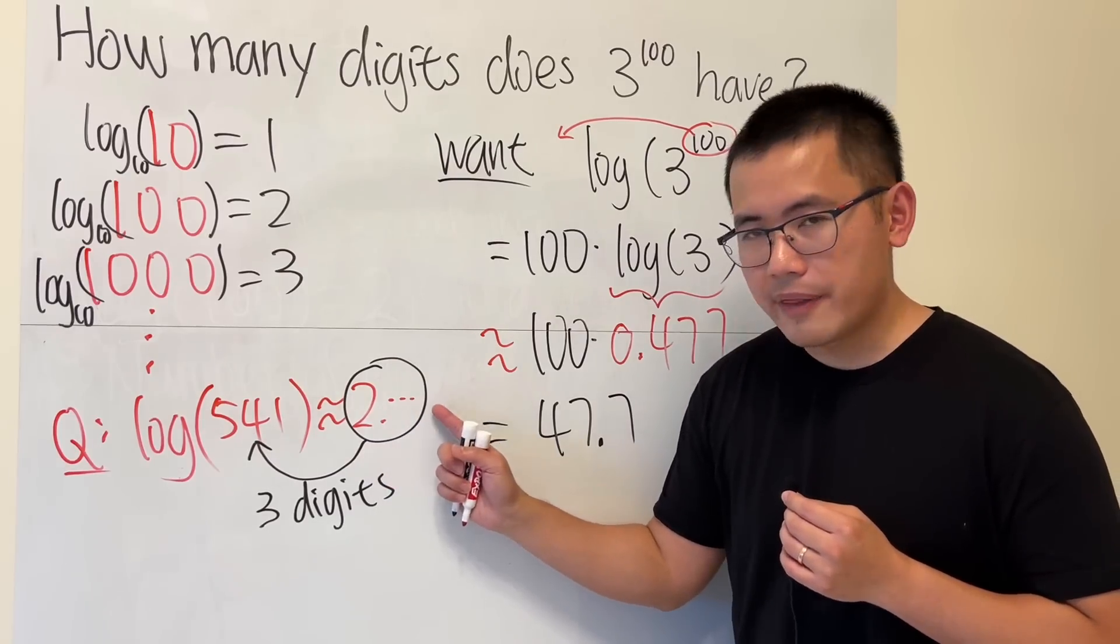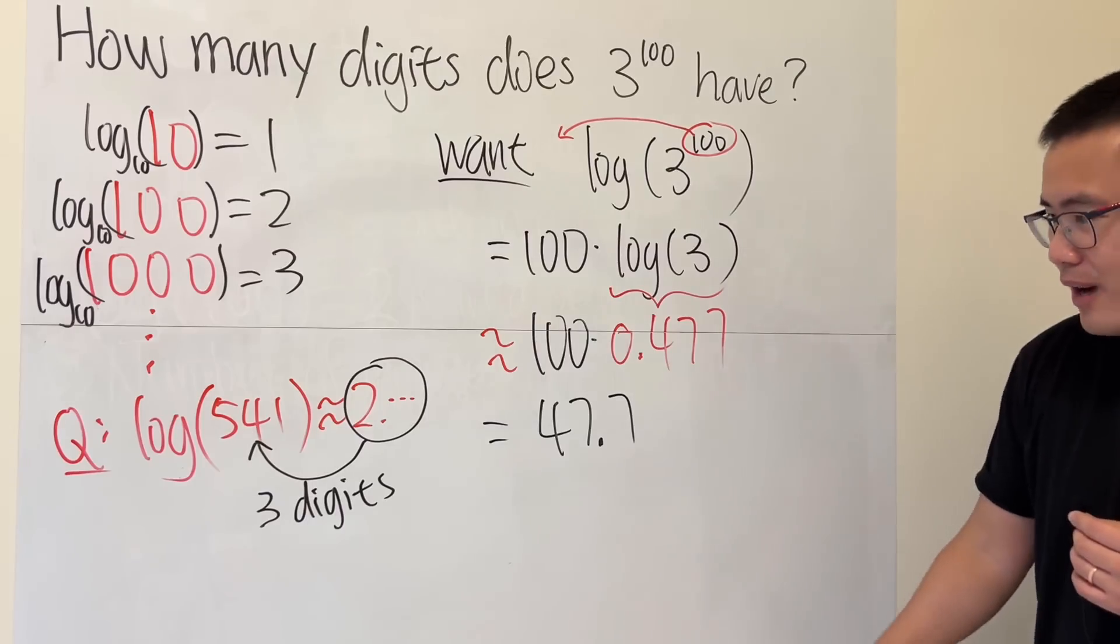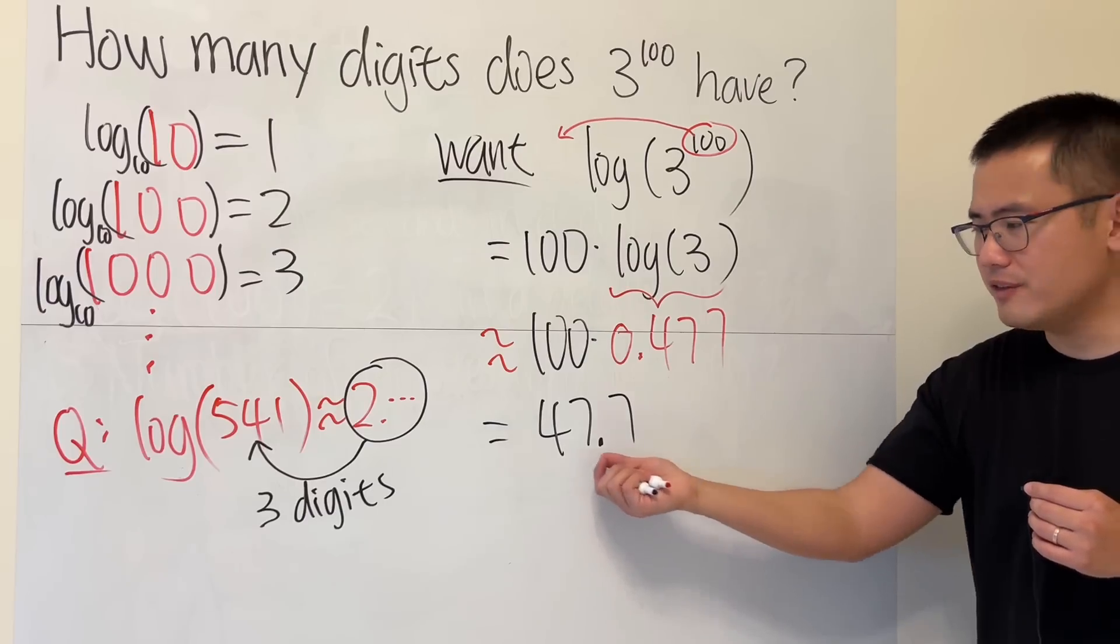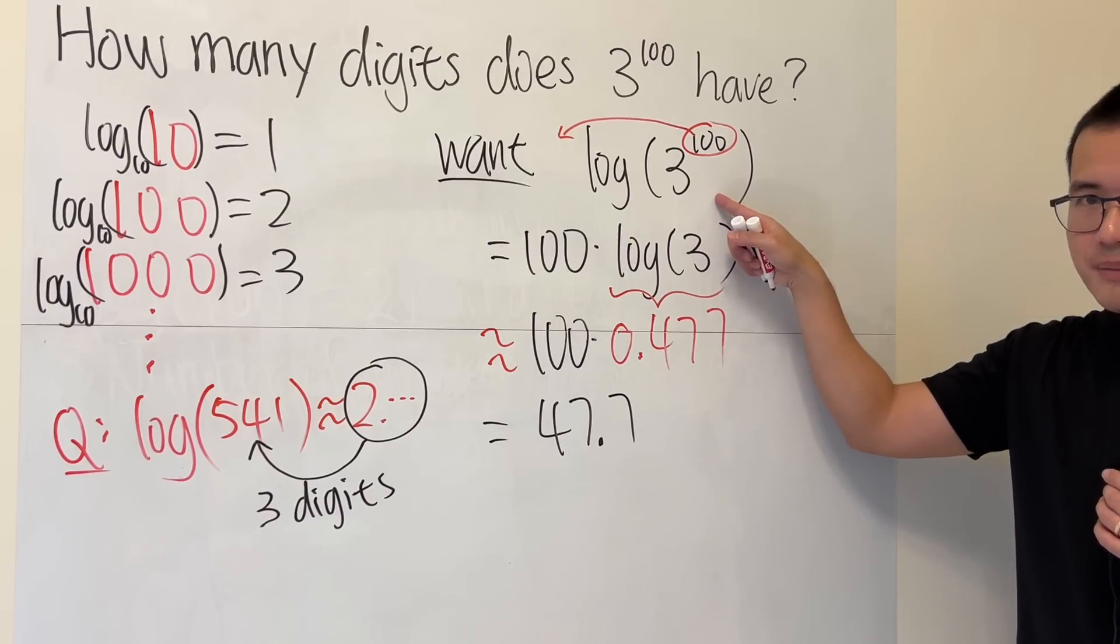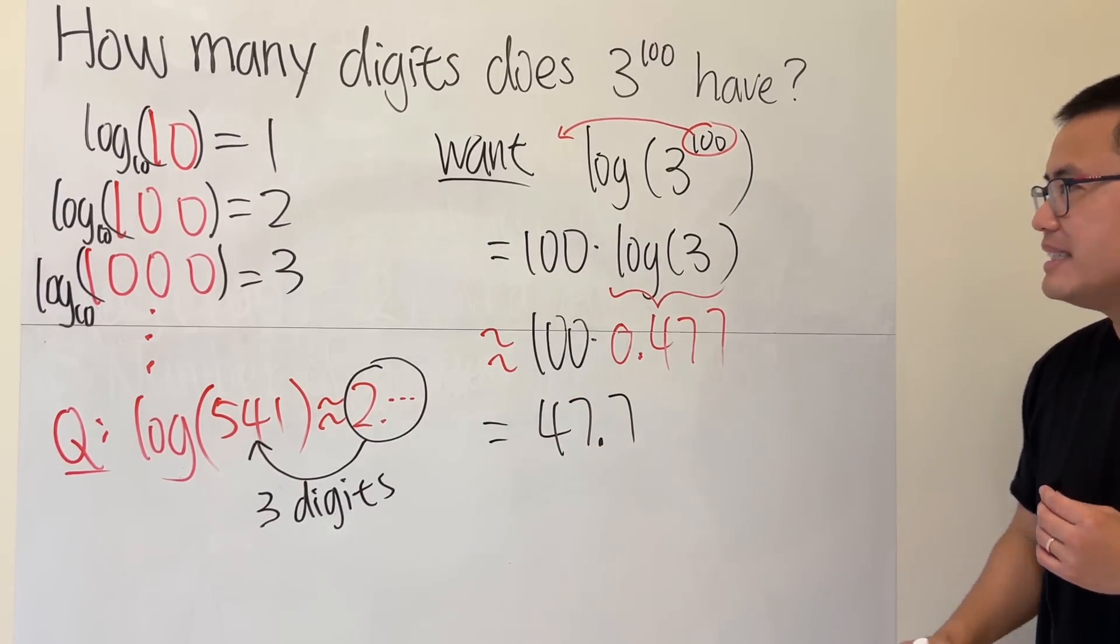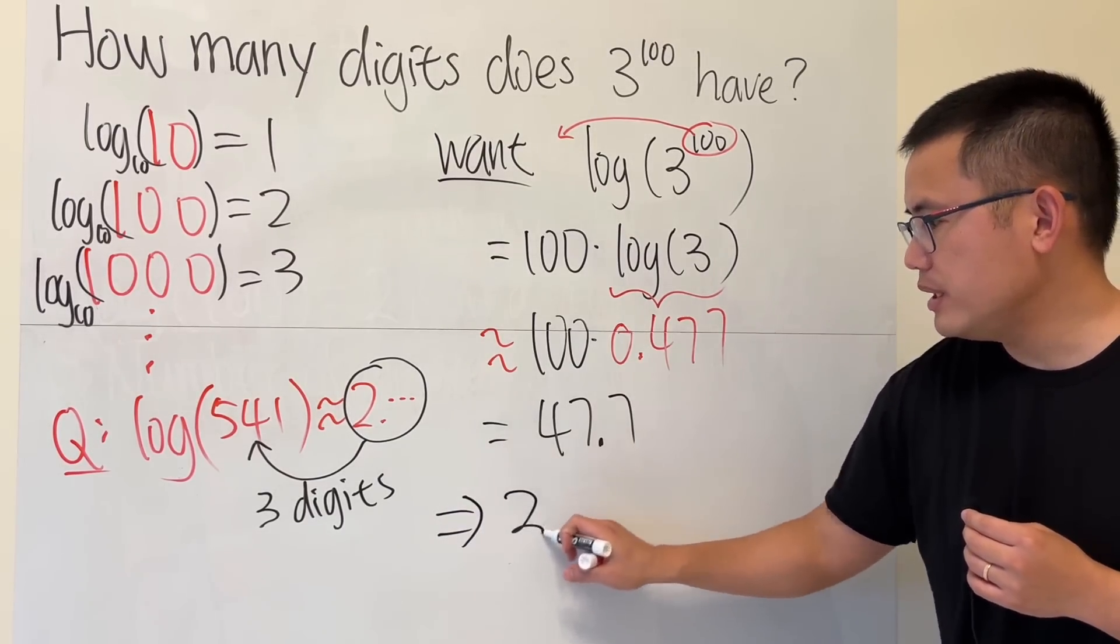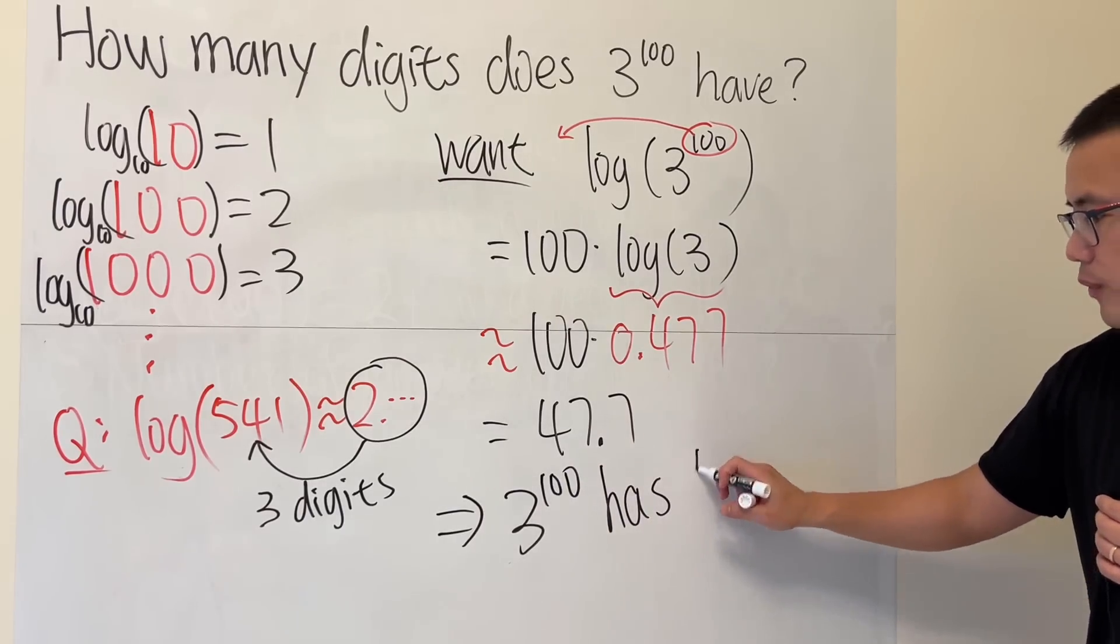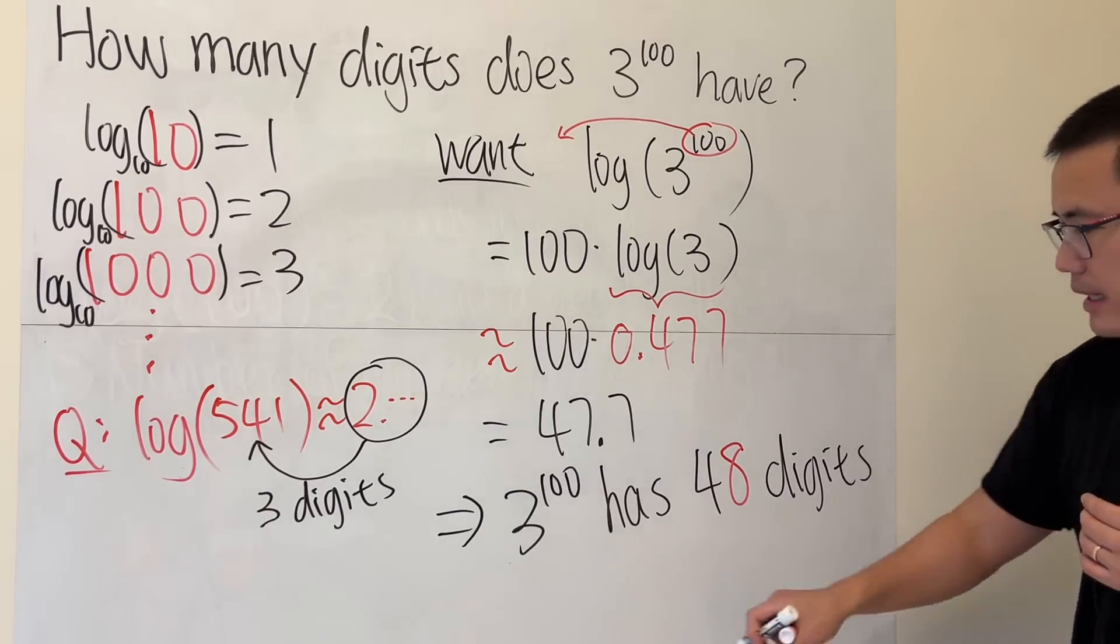So what does that mean? Remember earlier when we saw 2 point something, we had the inside being a three-digit number. Now log of this gives us 47.7, right? 47 point something. So that means this has how many digits? You just round up regardless of what this number is: you have 48. So I will tell you, 3 to the 100th power has 48 digits, and that's how you do it.